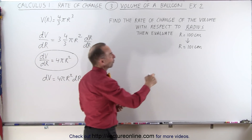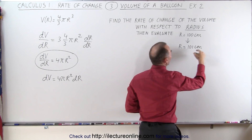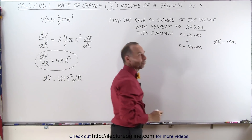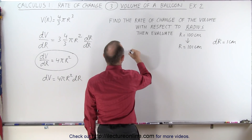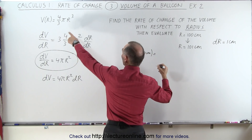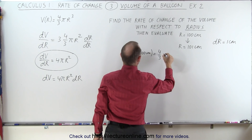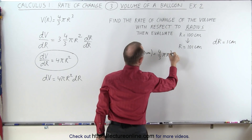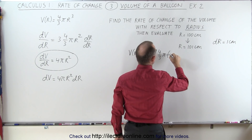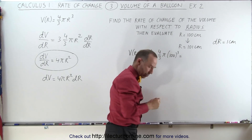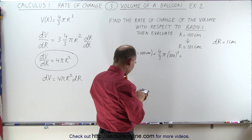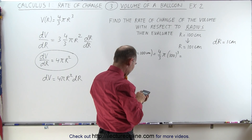We're going from r = 100 centimeters to r = 101 centimeters, so the change in r is going to be 1 centimeter. Let's calculate the volume when r equals 100 centimeters using the equation 4/3 pi r cubed. So it would be 100 cubed, and we need a calculator for that: 100 cubed times 4 times pi divided by 3.